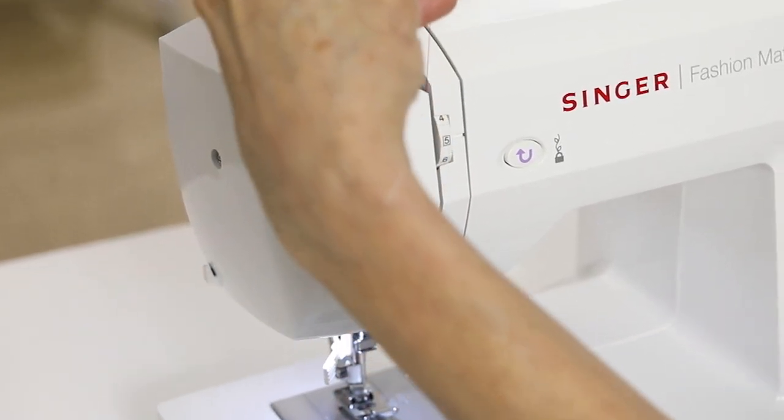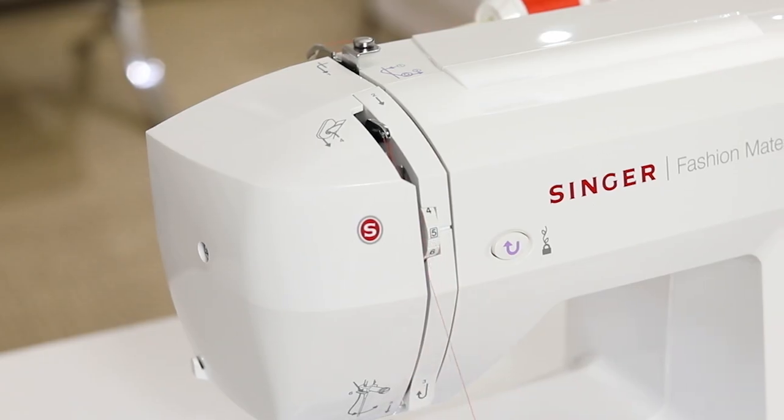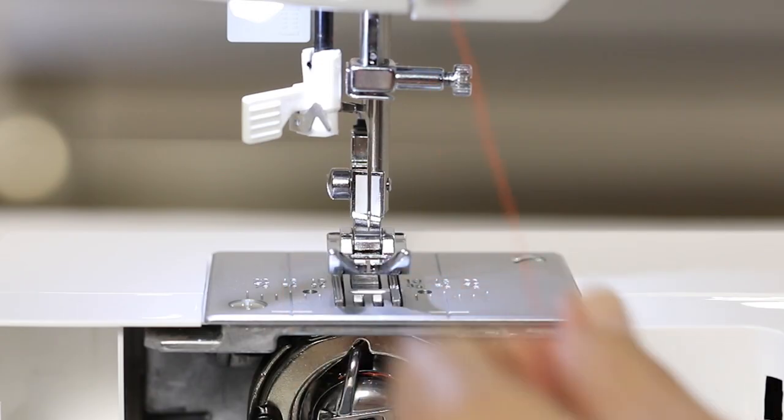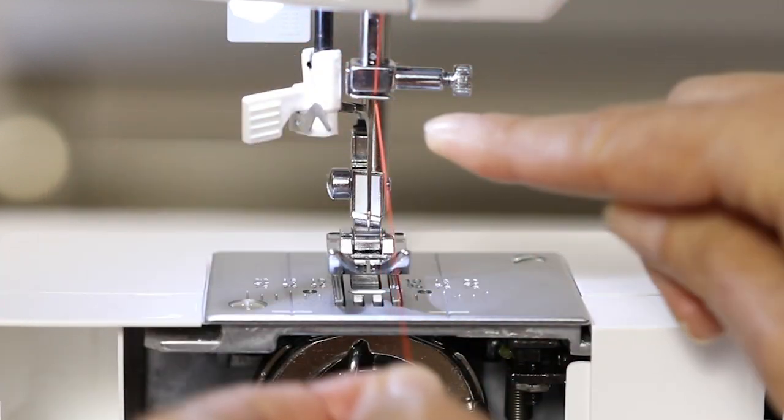And we're going to bring it down this channel on the right around this U-turn. Bring it up to the right side of the thread take up lever, cross over to the left and bring it down again and make sure that you see the thread slip into that hole on the take up lever. That's very important or the machine won't sew right. Next we're going to place the thread into this thread guide just above the needle.